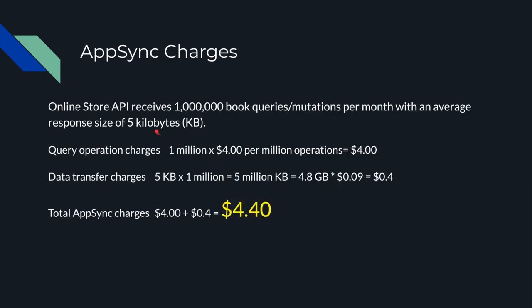To calculate the cost, we need a scenario. Let's say our bookstore receives 1 million queries or mutations per month — our bookstore is really popular, so we get many queries: people search for books, admins create books, and so on. Most of these are probably read queries. Also, let's imagine the average response size for a request is about 5 kilobytes, so a book search query returns 5 kilobytes of data.